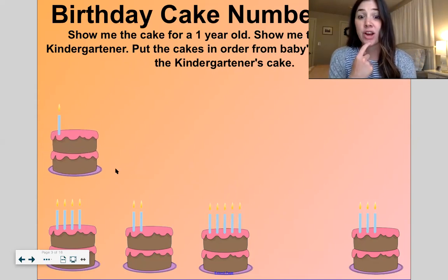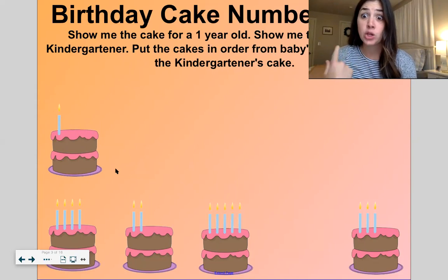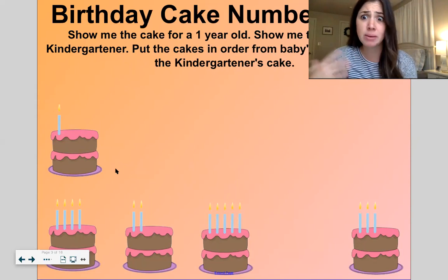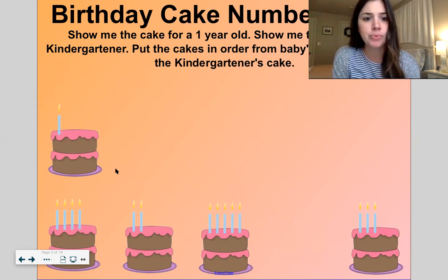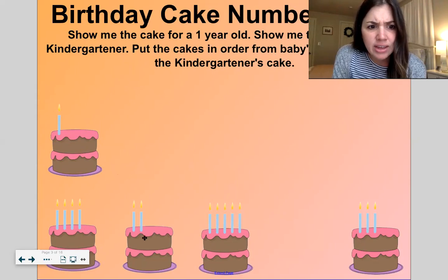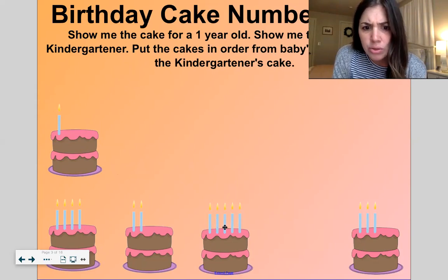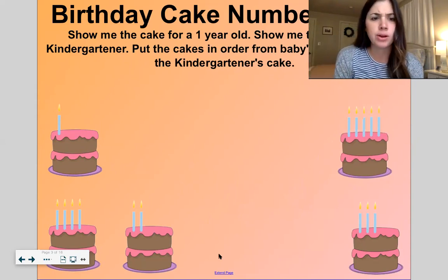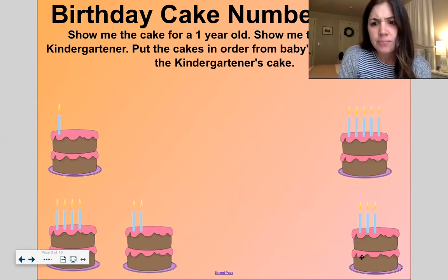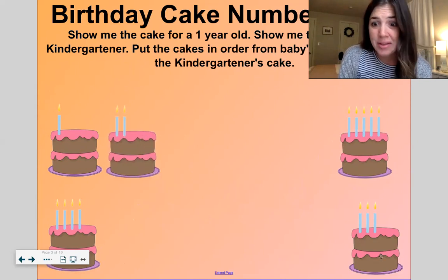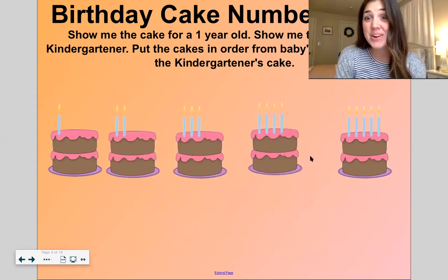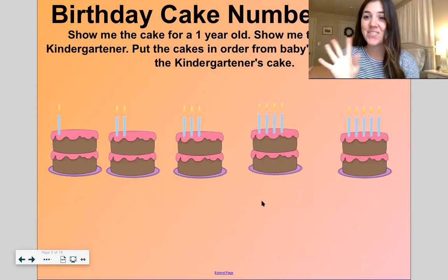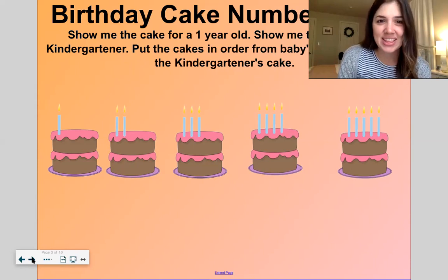Now show me the cake for a kindergartner. Usually you're five or you're six when you're in kindergarten. Most people are five turning six. Let's see, which one has five candles? One, two, three, four, five. This one. Now let's put the rest of them in order. So we have one, two, three, four, five. Now they're in order.